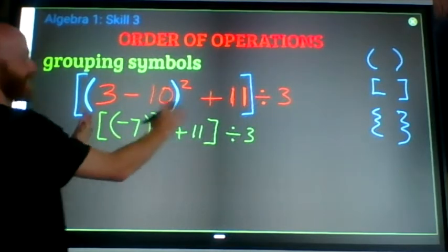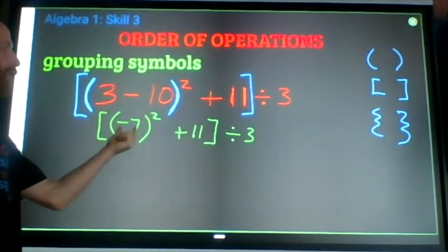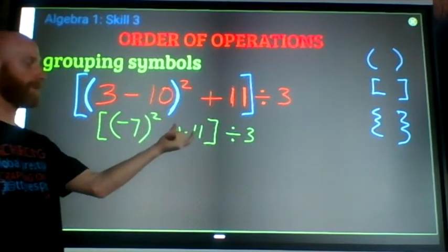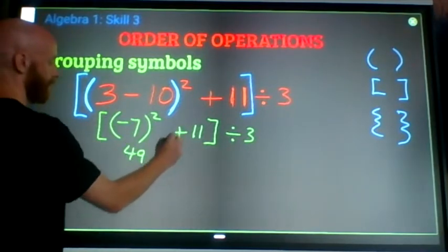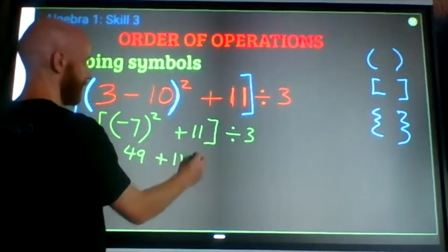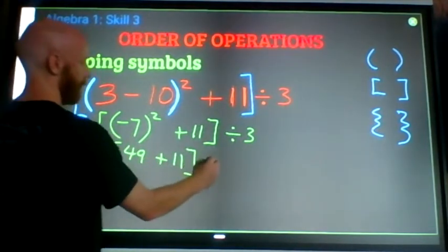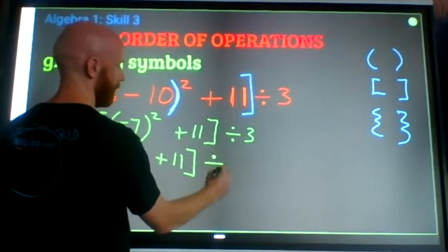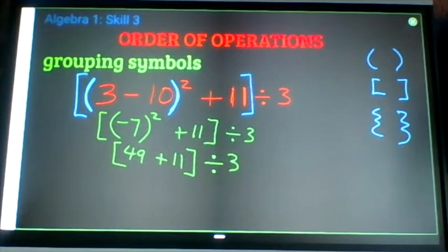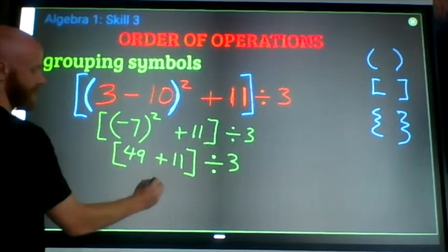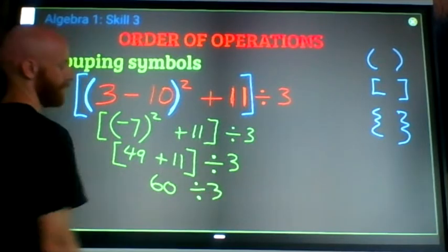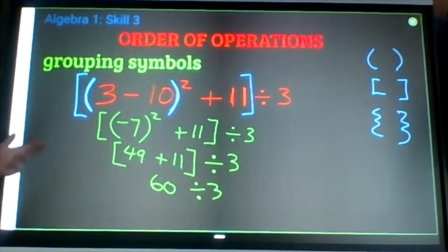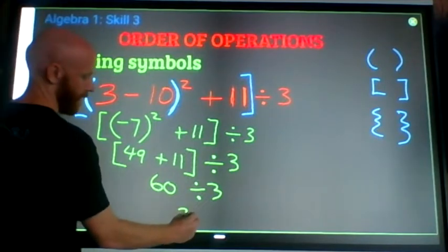Plus 11. Divide by three. That's the first move. Second move. Now I'm inside still of the brackets. I have two operations happening. Power and plus. Power is more powerful. So I'll do that first. Negative seven times negative seven is 49. Positive 49 plus 11. Divide by three. Still working inside. 49 plus 11 is 60. And finally, 60 divided by three is 20.